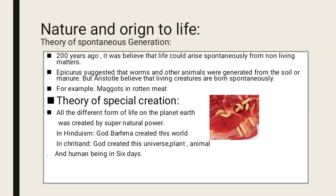Now the next major topic of this presentation is Nature and Origin of Life. It includes the theory of spontaneous generation. Two hundred years ago, it was believed that life could arise spontaneously from non-living matter. Epicurus suggested that worms and other animals were generated from soil or manure, and Aristotle believed that living creatures are born spontaneously — for example, maggots in rotten meat.